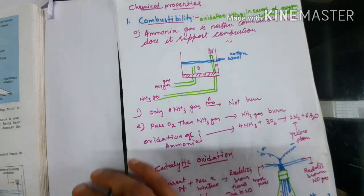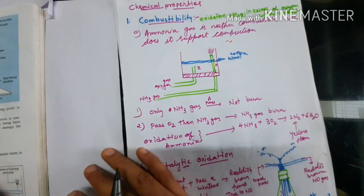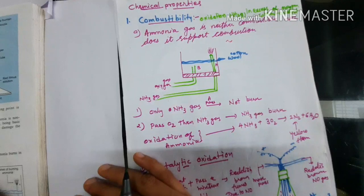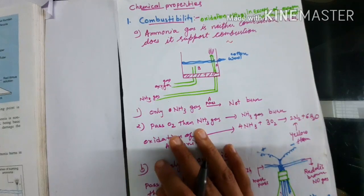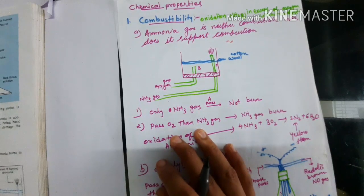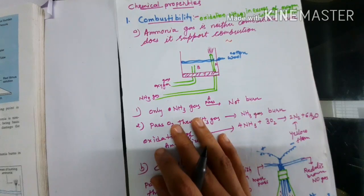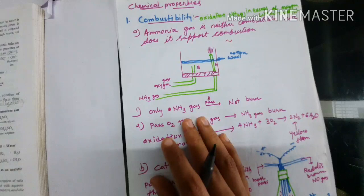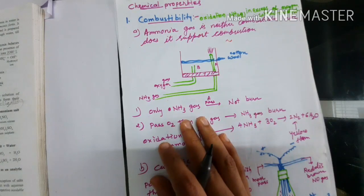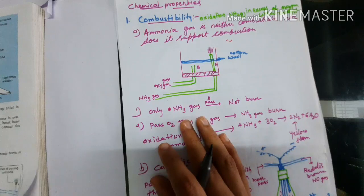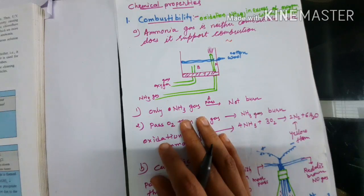I hope you have read all the physical properties of ammonia gas. Now the next topic is the chemical properties of ammonia gas. There are three to four chemical properties: first, combustibility; second, reduction reaction; and third, the basic nature of ammonia gas. These three chemical properties we have to learn in this topic.